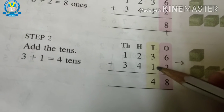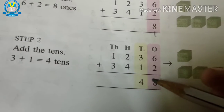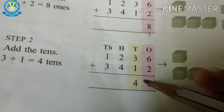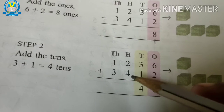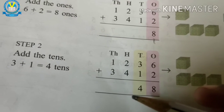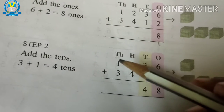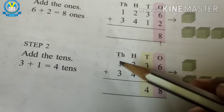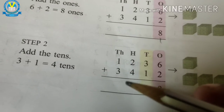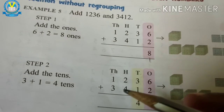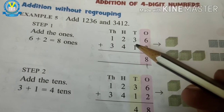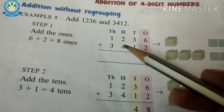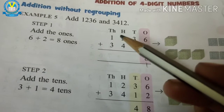Second step: adding tens place values — three plus one equals four. Third step: adding hundreds place values — two plus four equals six. Fourth step: adding thousands place values — one plus three equals four. So the four steps are: ones place, tens place, hundreds place, thousands place.